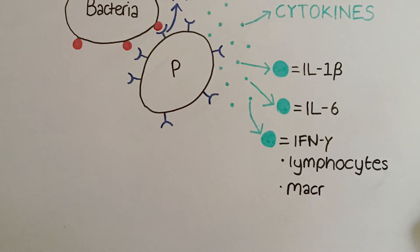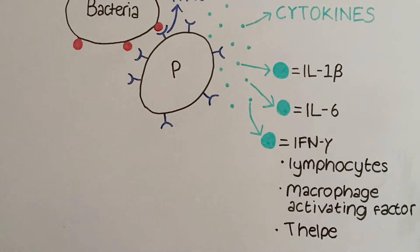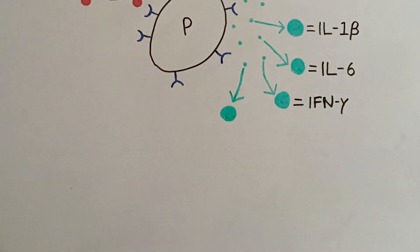Interferon gamma is secreted by lymphocytes and acts as a macrophage activating factor, as well as proliferating T-helper 1 cells through positive feedback mechanisms. TNF-alpha is secreted by monocytes and other immune cells. It causes fever and pain, and it also signals through the NF-kappa-B pathway.